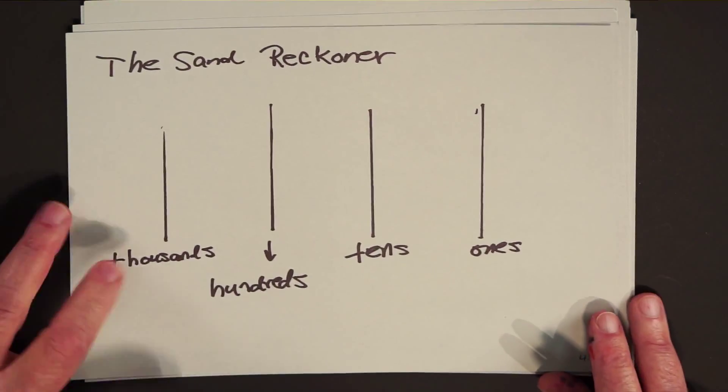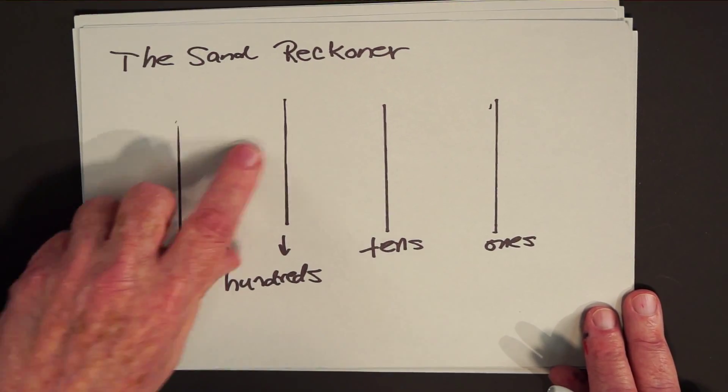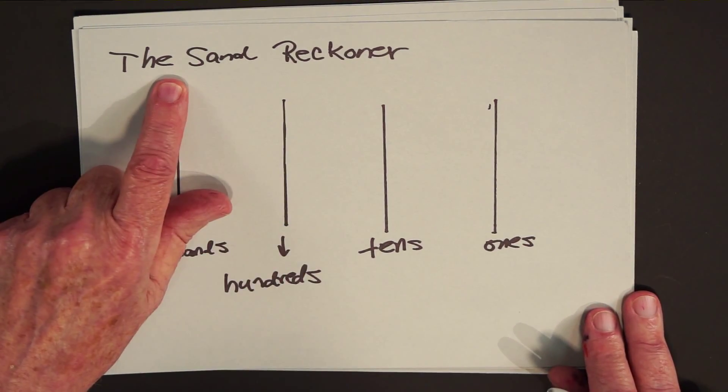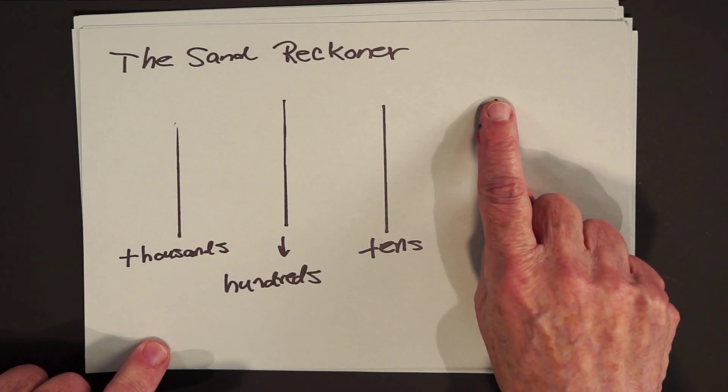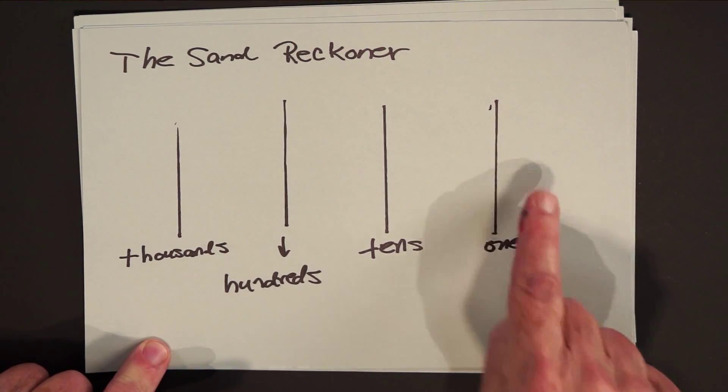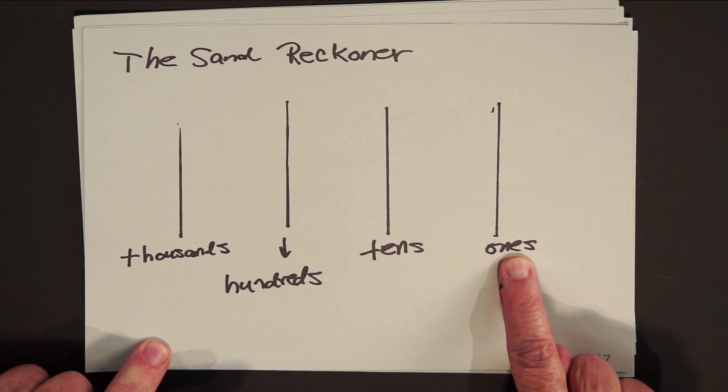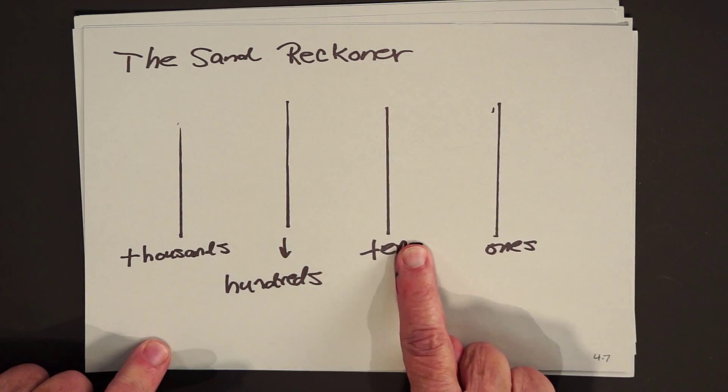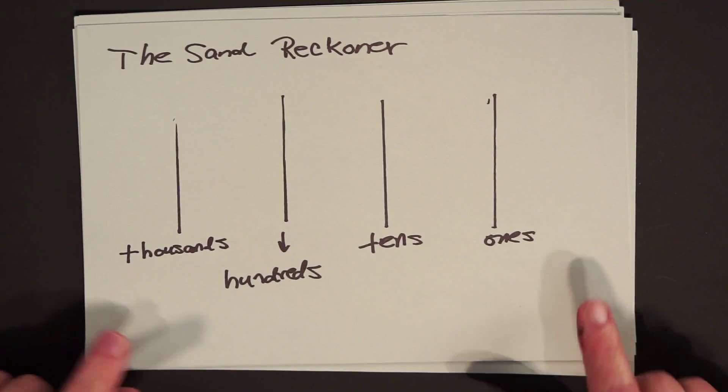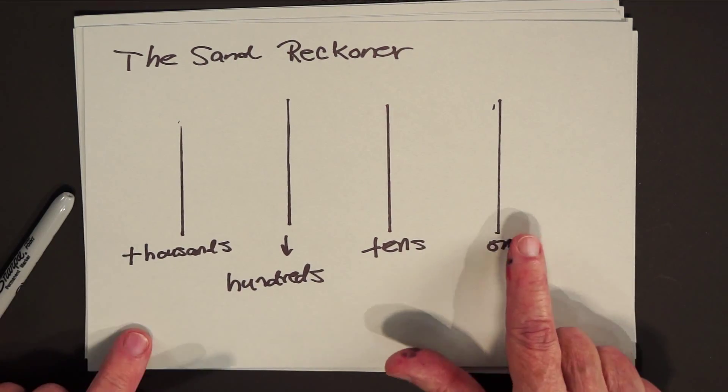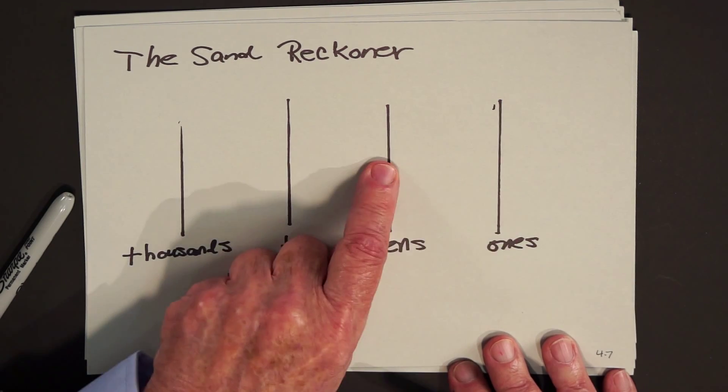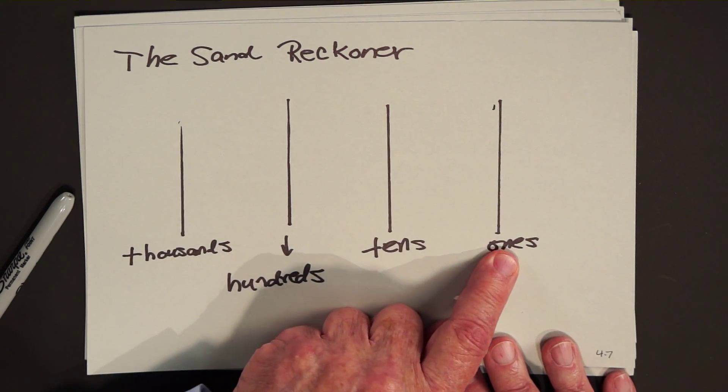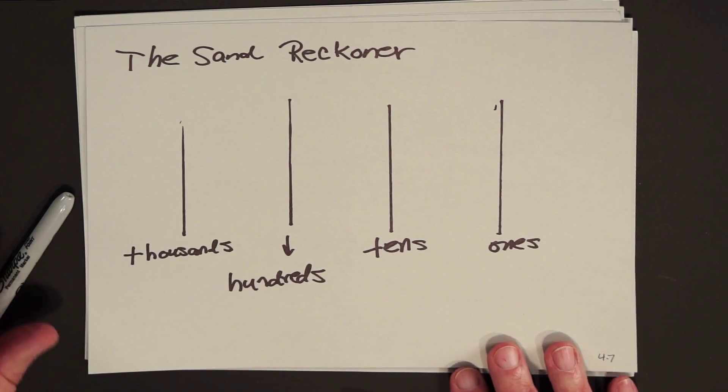And so the next thing that was invented was something that was called the Sand Reckoner. That's in Western civilization. In Eastern civilization it was called the Abacus. What people did was they drew lines in the sand, parallel to each other, vertical lines. The first line to the right would be ones, the next line tens, the next hundreds, the next thousands. This is the first example of place value. You see, all these lines look alike, but we can tell which line is which by its position. In other words, this line looks like this line, but this line is the ones. This is the tens, the hundreds, the thousands.